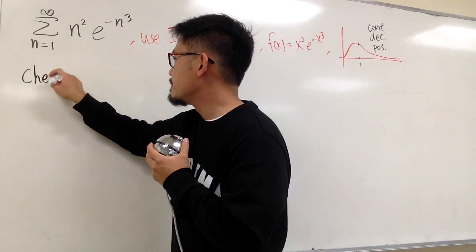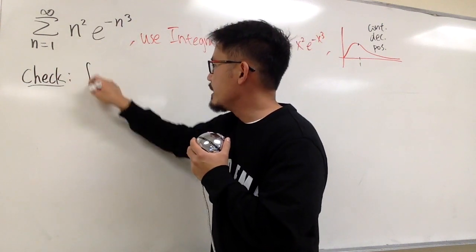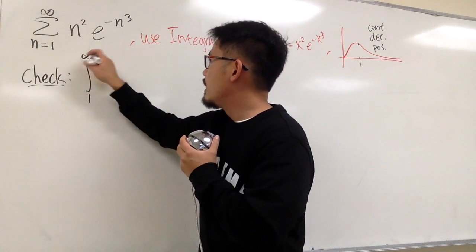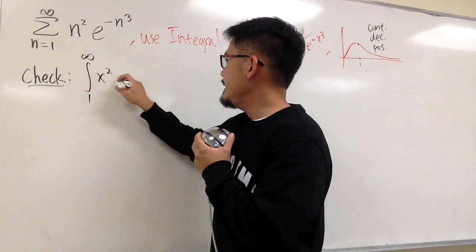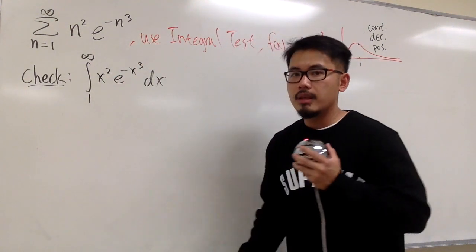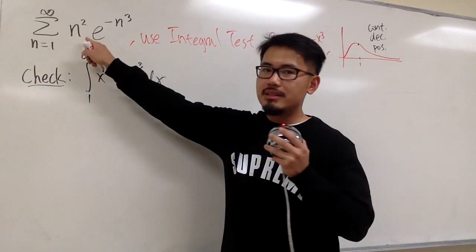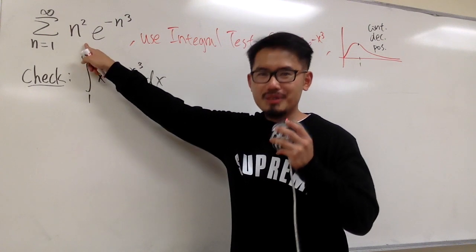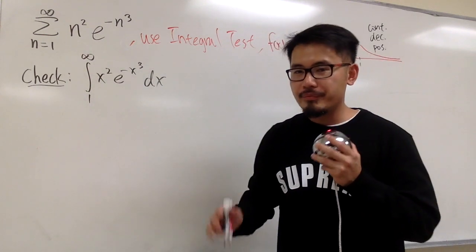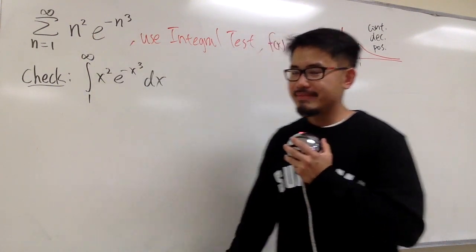We are going to check the corresponding improper integral from 1 to infinity of x squared times e to the negative x to the third power dx. The integral test says: if this improper integral converges, then the infinite series also converges — though they may not converge to the same value. If this diverges, that also diverges.